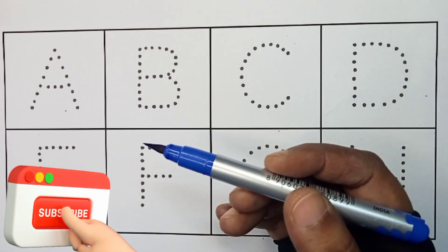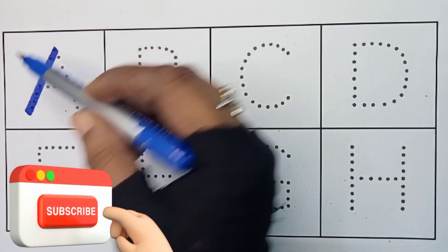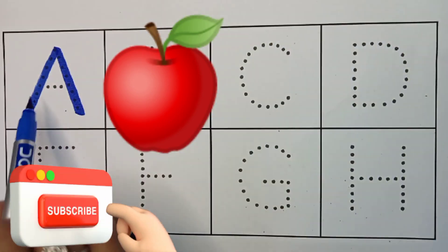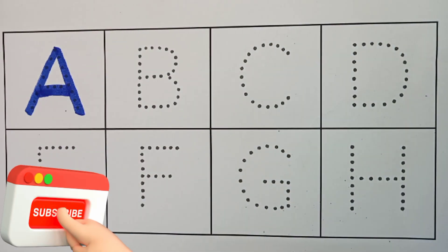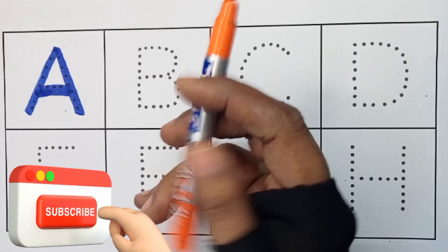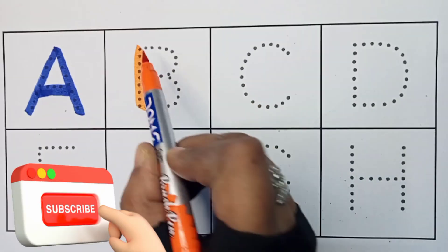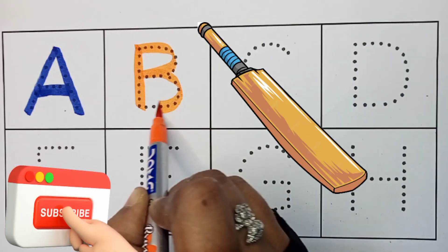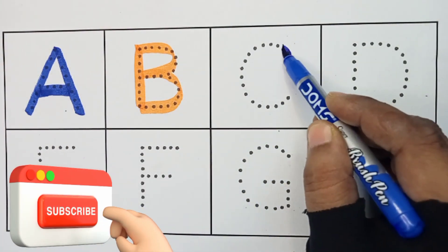Blue color. A. A for apple. Orange color. B. B for bat. Blue color.